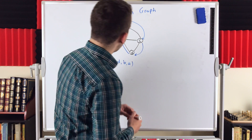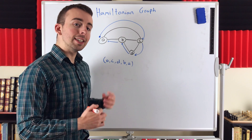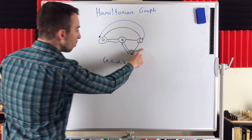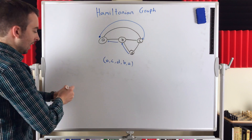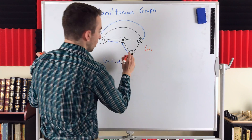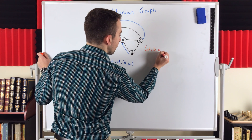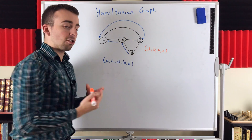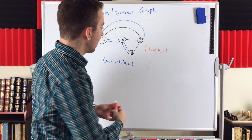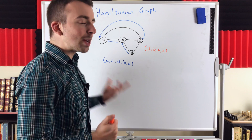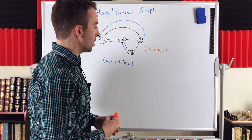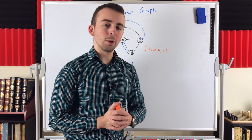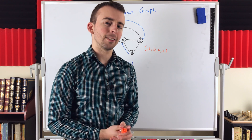Something interesting about a Hamiltonian cycle is that if we delete an edge from the cycle, we're left with a neat sort of path. If we delete one edge, we get a path going from D all the way to C — specifically D to B to A to C. This is a path that contains every vertex of the graph, called a Hamiltonian path. Whenever we have a Hamiltonian cycle, we can create a Hamiltonian path by deleting one edge. The converse is not necessarily true: if we have a Hamiltonian path, we may or may not be able to find a Hamiltonian cycle.